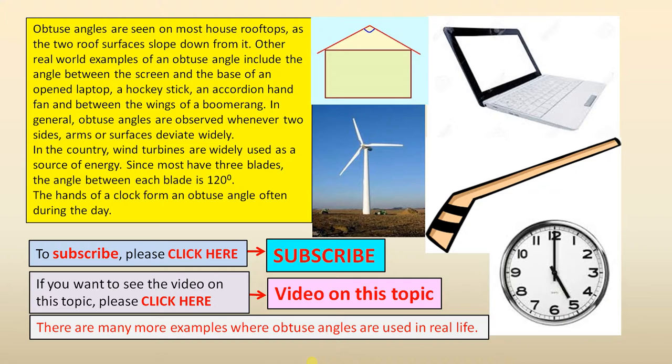In general, obtuse angles are observed whenever two sides, arms, or surfaces deviate widely. In the country, wind turbines are widely used as a source of energy. Since most have three blades, the angle between each blade is 120 degrees. The hands of a clock form an obtuse angle often during the day.